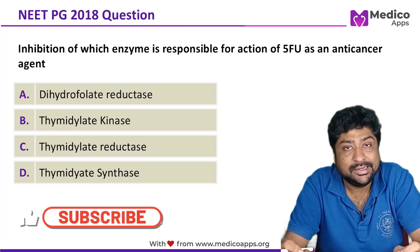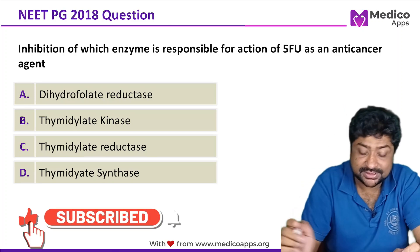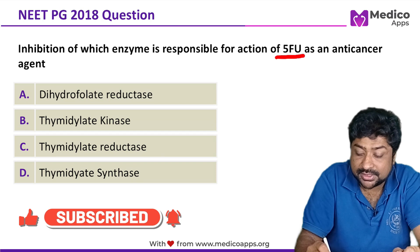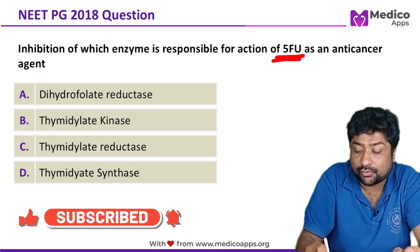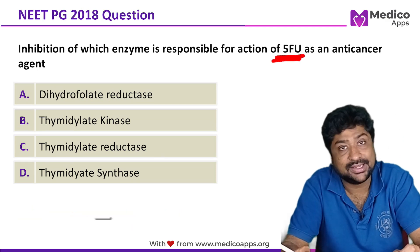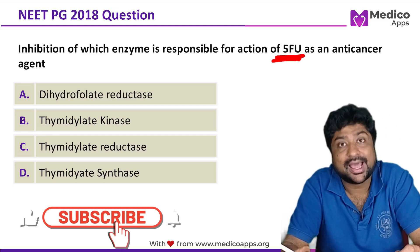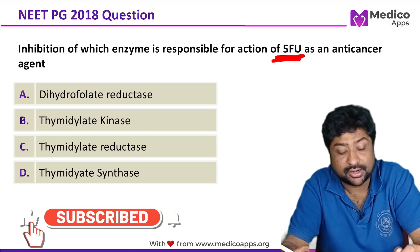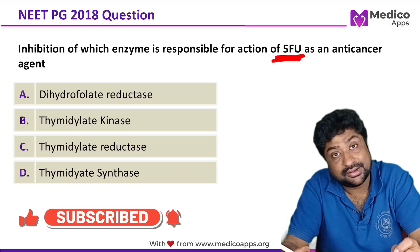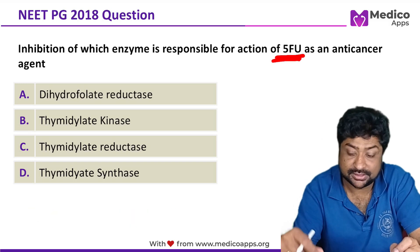This question appeared in NEET PG 2018. The question is: inhibition of which of the following enzymes is responsible for the action of 5-fluorouracil as an anti-cancer agent? The options are dihydrofolate reductase, thymidylate kinase, thymidylate reductase, or thymidylate synthase.